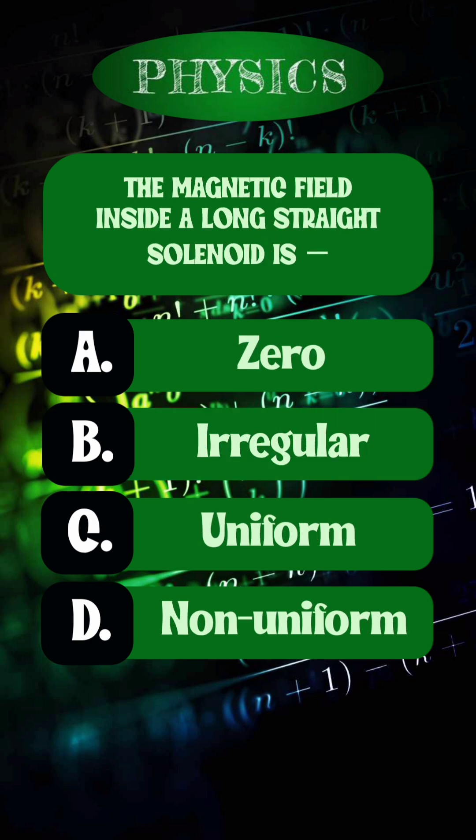Question 5. The magnetic field inside a long straight solenoid is? Right answer is option C, uniform.